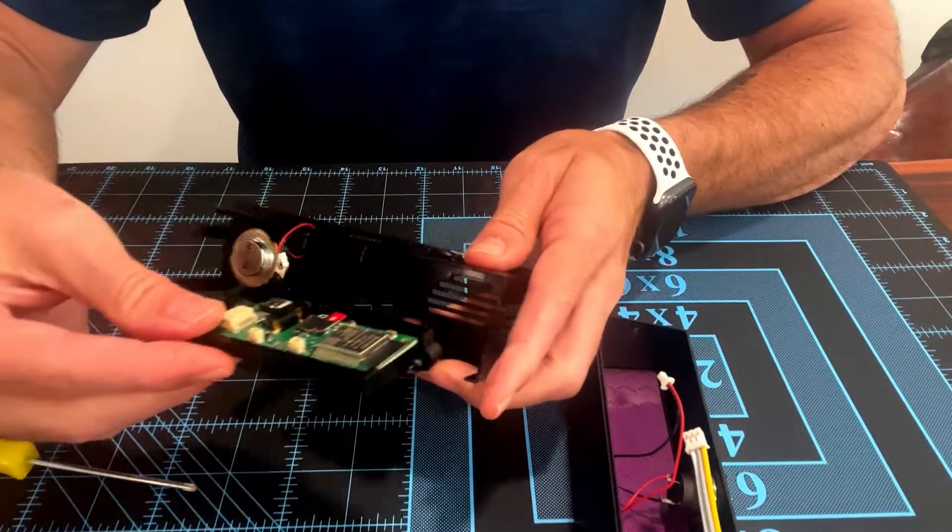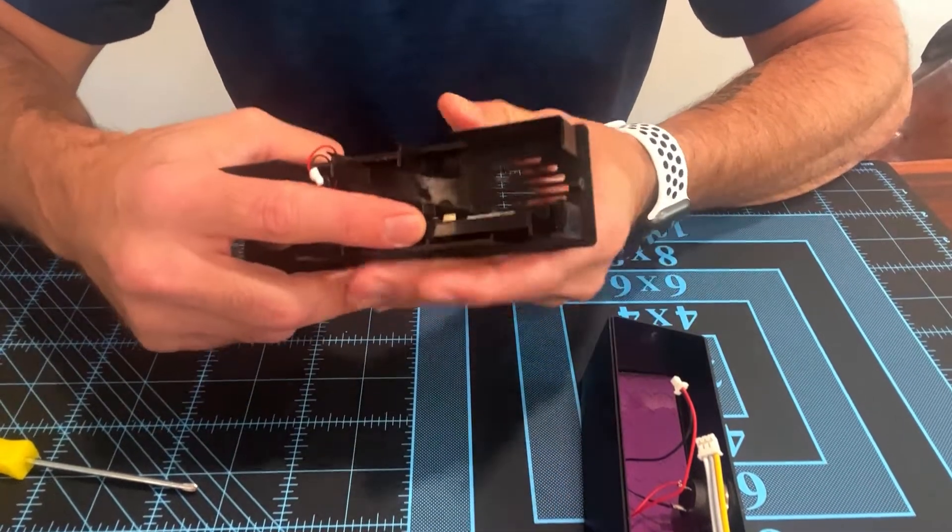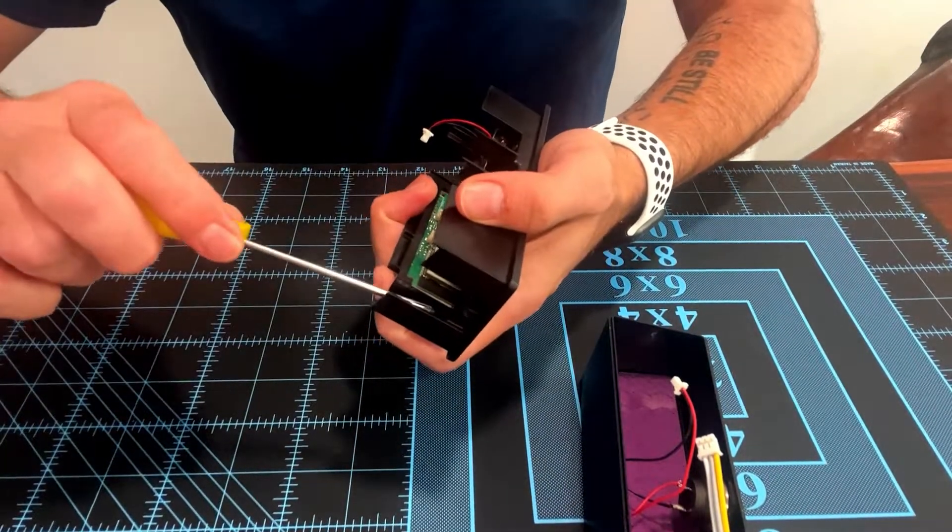Now when you put the circuit board in, the board itself goes towards the top. Just slide it over the holes and screw in.